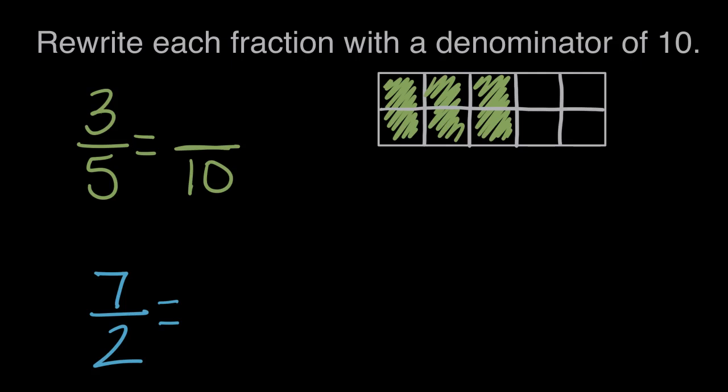So our denominator doubled. We multiplied it by two. We have twice as many pieces. But look at what happened to our numerator. Instead of three pieces, now we have one, two, three, four, five, six pieces. It also doubled.